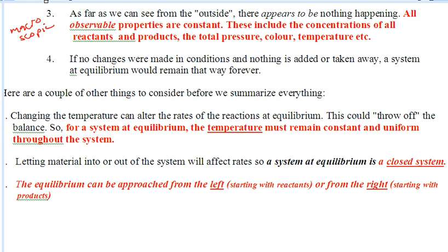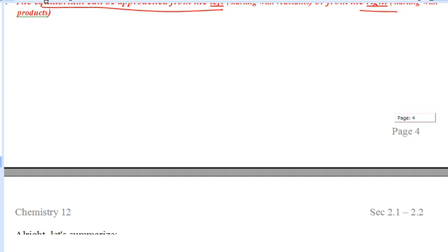And because you have the forward rate and the reverse rate happening at the same time, there's really no such thing as reactants and products anymore. You've just got a mixture of reactants on the left and products on the right. But you can start this equilibrium from the left or the right. That's going to be hard for you to wrap your head around. We'll chat more about that later.